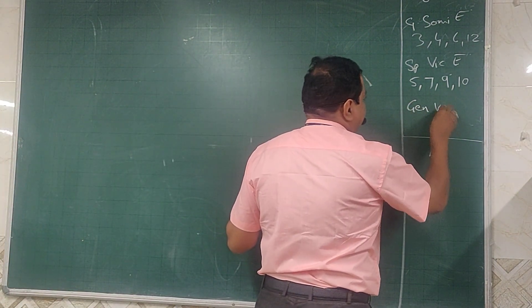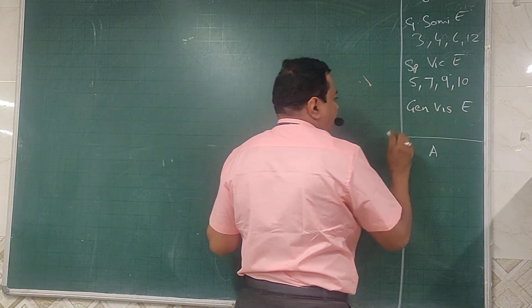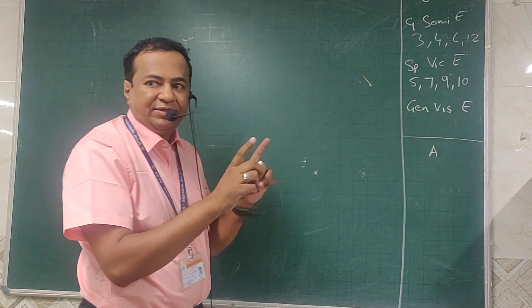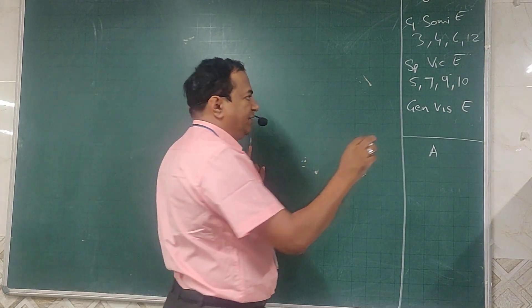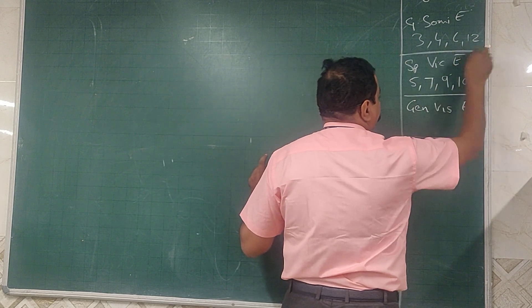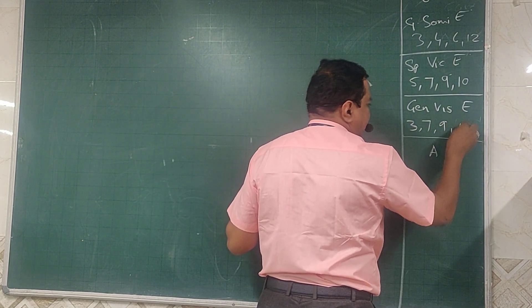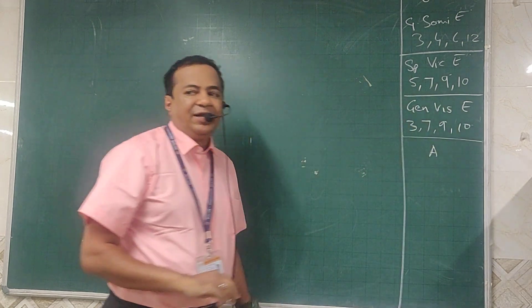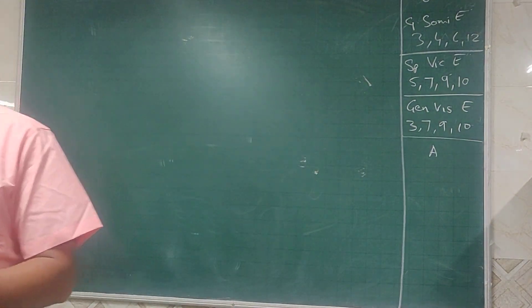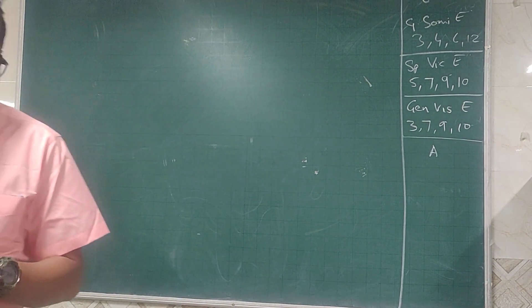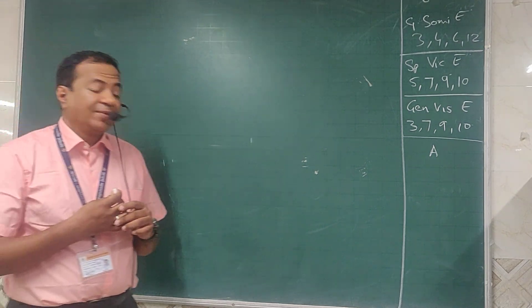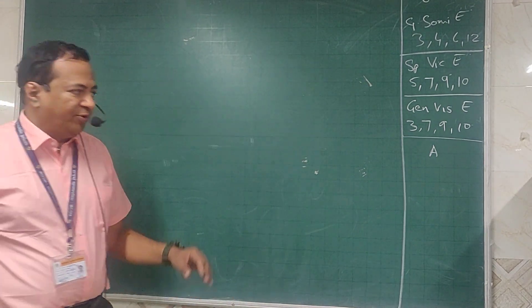General visceral efferent, this is parasympathetic. So 3rd now supplying the iris, 7, 9, 10. 7 supplying lacrimal gland, 9 supplying the parotid gland, and 10 supplying the afferent components.